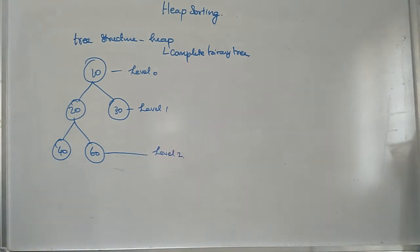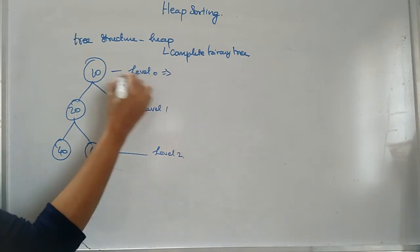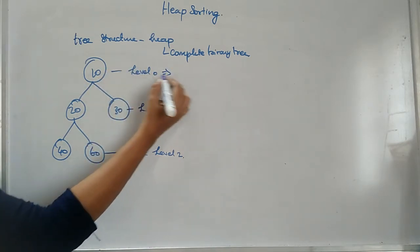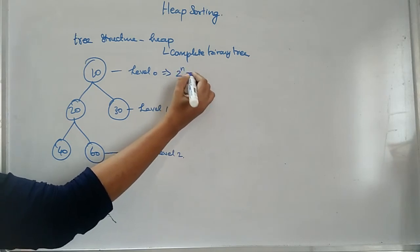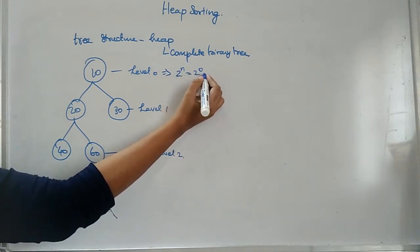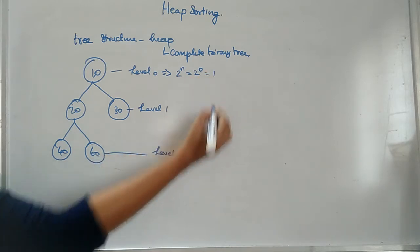So what's the maximum number of nodes present in level 0? It's 2 to the power of n, so it means 2 to the power of 0, which will be equal to 1.